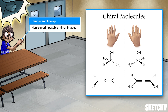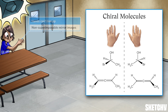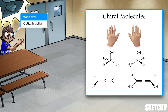If a molecule is chiral, it will have some special properties. For example, a chiral molecule will always have an enantiomer — but more on that later. And a chiral molecule is optically active, just like this guy is with those wide open eyes. More on that later, too.